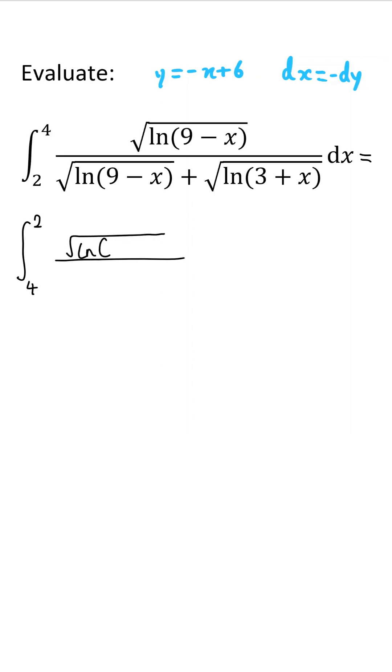And that's going to become the square root of log of 3 plus y and our denominator is going to become the square root of log of 3 plus y plus the square root of log of 9 minus y and dx is equal to negative dy.